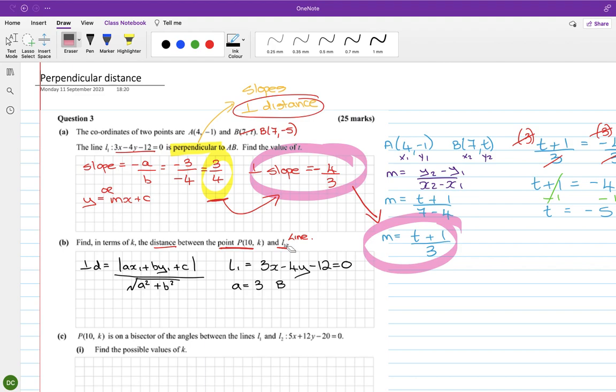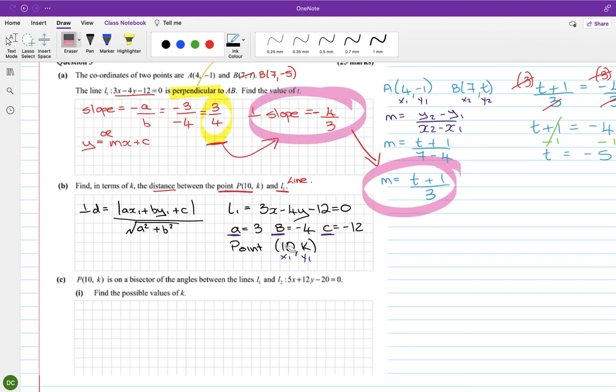And then the point... okay, so that is x1 and y1, and then a, b, and c. Right, so we sub it in. So the perpendicular distance is 3 by 10 plus minus 4 by k minus 12 over the square root of 3 squared plus minus 4 squared.